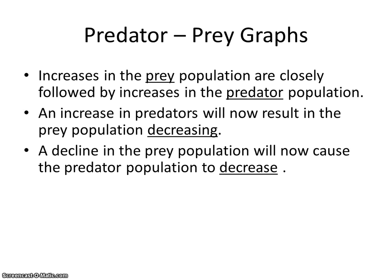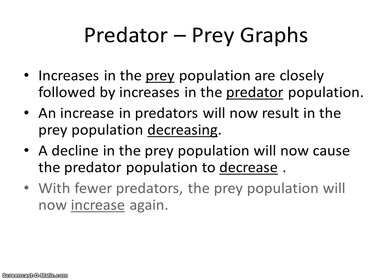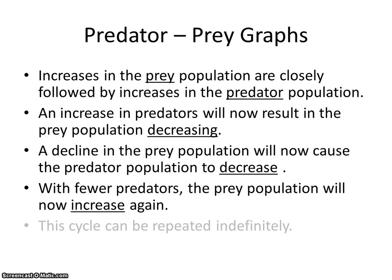They really rely on each other. When one increases, the other increases, and when one decreases, the other decreases as well. With the predator population declining, the few moose still around have fewer wolves to hunt them, so they're going to reproduce and the prey population increases again. This cycle can continue indefinitely as long as the natural order is not interrupted. To summarize: increases in prey are closely followed by increases in predators; an increase in predators causes prey to decrease; a decline in prey causes predators to decrease; and with fewer predators, prey increases again.